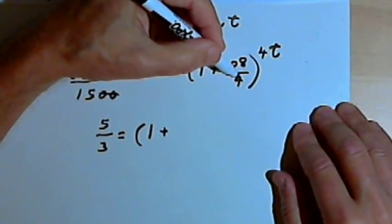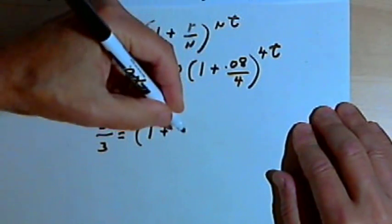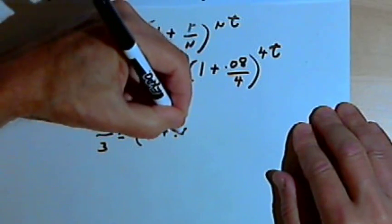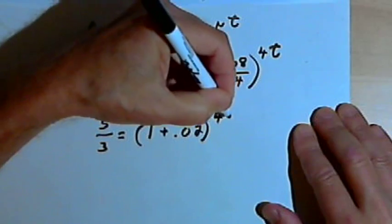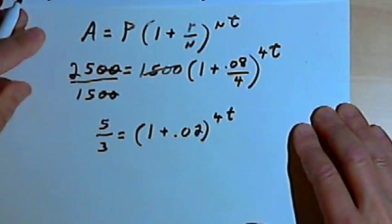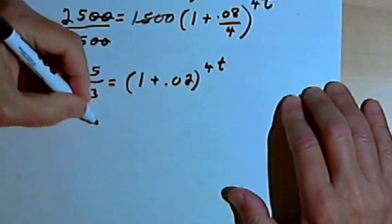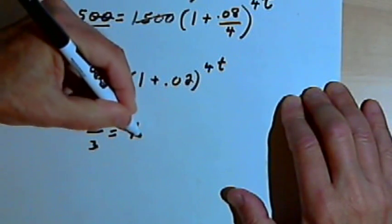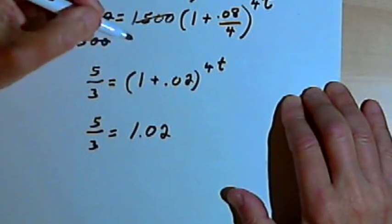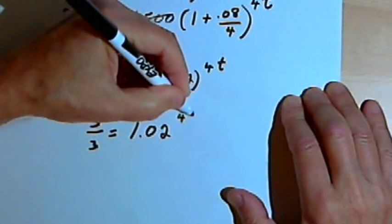I've got this 1 plus 0.08 divided by 4. Well, let's see, 8 divided by 4 is 2. So 0.08 divided by 4 would be 0.02. And we're raising that to the 4t power. So let's clean this up a little more. I have 5 thirds equals 1.02 raised to the 4t power.